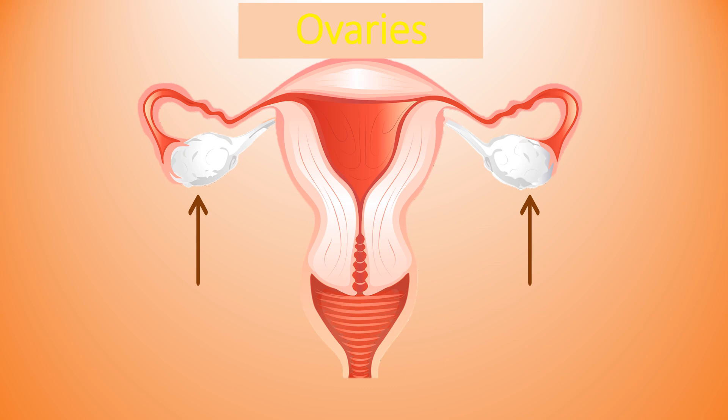Here you can see two ovaries lying beneath the uterus. Ovaries are the main organ of the female reproductive system, responsible for producing eggs and female sex hormones. They lie on the upper right and left side of the uterus, and each ovary is an almond-shaped structure.